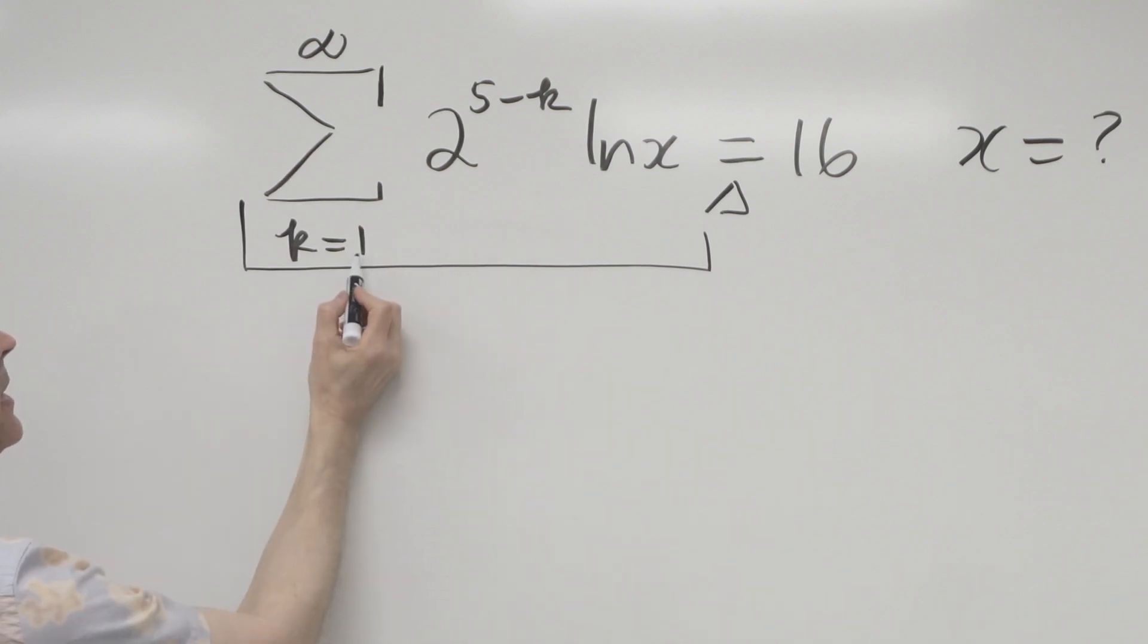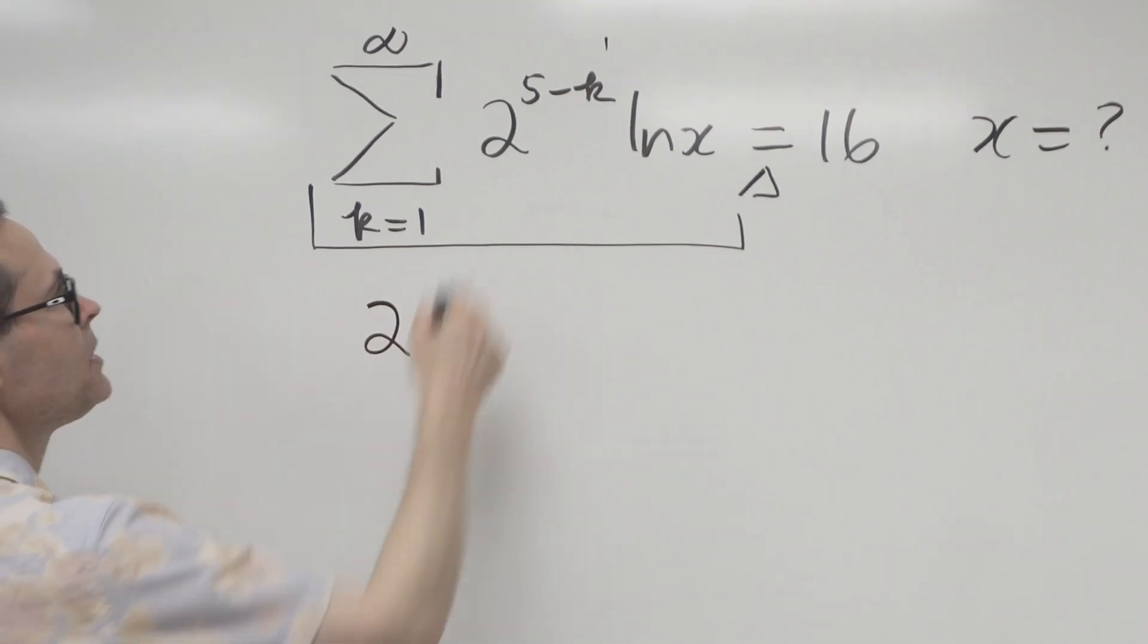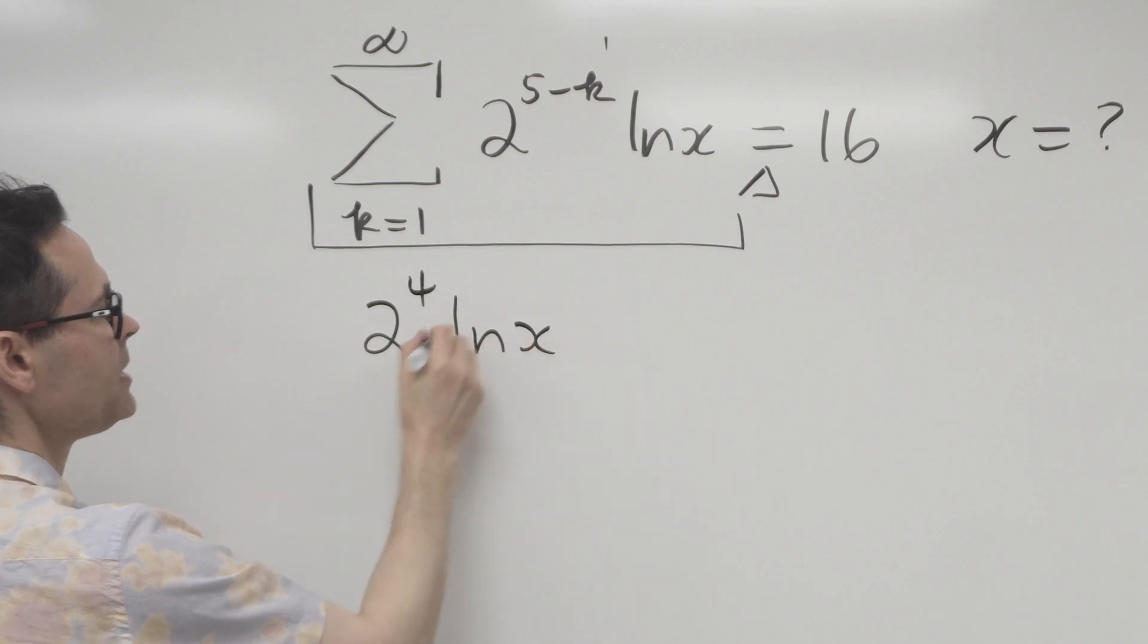So summation means I begin with the lower limit of summation 1, and I put it in where the k is. So that's gonna be equivalent to 2 to the 5 minus 1 is 4, ln x, these are being times together.